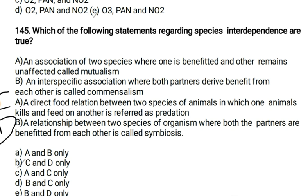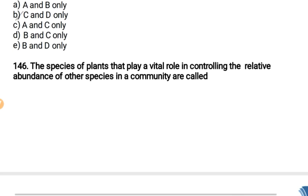In a pyramid of numbers in a grassland ecosystem, the largest population is that of producers. The group of gases that cause photochemical smog are oxygen, PAN, and nitrogen dioxide. Regarding species interdependence: a direct food relation between two species where one animal kills and feeds on another is called predation, and a relationship where both partners benefit from each other is called symbiosis — both statements are correct.